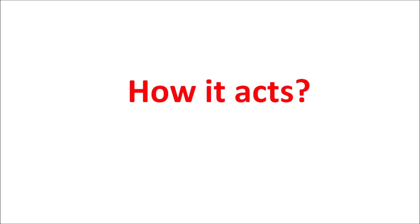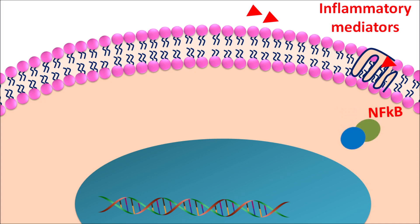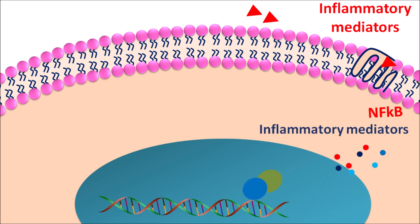Now let us see how this drug acts. Inflammatory mediators can act on their corresponding receptors. When these receptors are activated, they can stimulate the NF-κB pathway — nuclear factor kappa B. This NF-κB can interact with the DNA to produce gene transcription and release inflammatory mediators like IL-4, IL-5, IL-13, and TNF-alpha, which are responsible for inflammation and development of skin reactions.